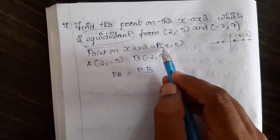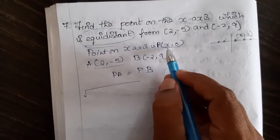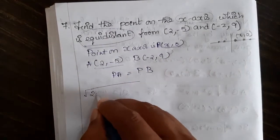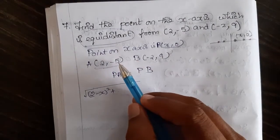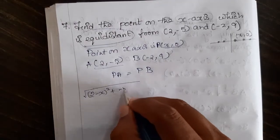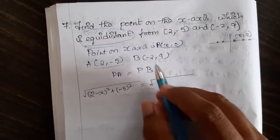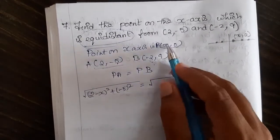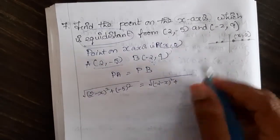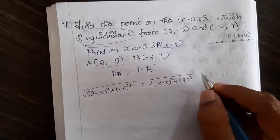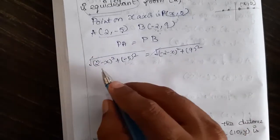To find PA, consider these two points: square root of (2 minus x)² plus (-5)² equals square root of (-2 minus x)² plus (9 minus 0)², which is 9². Since both sides have square roots, we can cancel them by squaring both sides.